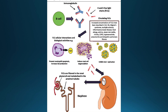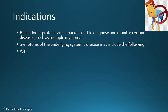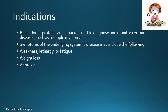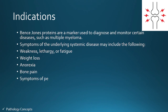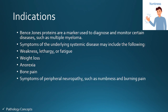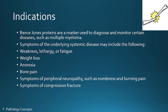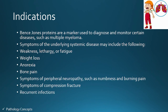Almost 60 percent of patients with classical myeloma have Bence Jones protein in their urine. Symptoms of the underlying systemic disease may include weakness, lethargy or fatigue, weight loss, anorexia, bone pain, symptoms of peripheral neuropathy such as numbness and burning pain, symptoms of compression fracture, and recurrent infections.